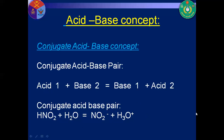Conjugate acid and base are the acid and base formed after a reaction between an acid and a base. If a base ion is formed by an acid, it is called the conjugate base of that acid. The hydronium ion is formed by water, so water is a base and hydronium ion is its conjugate acid.